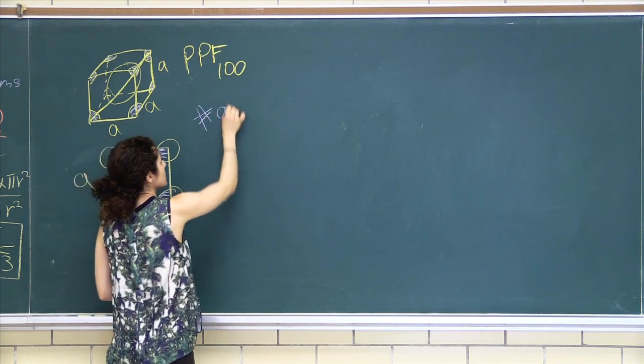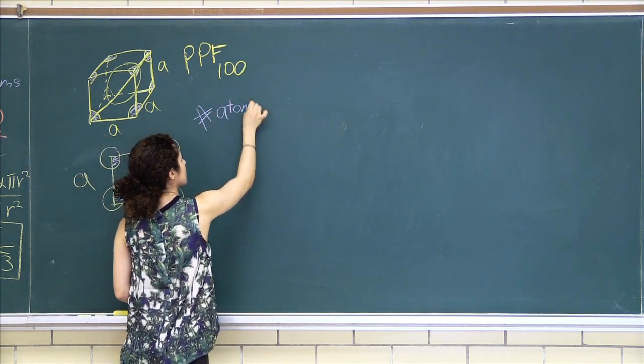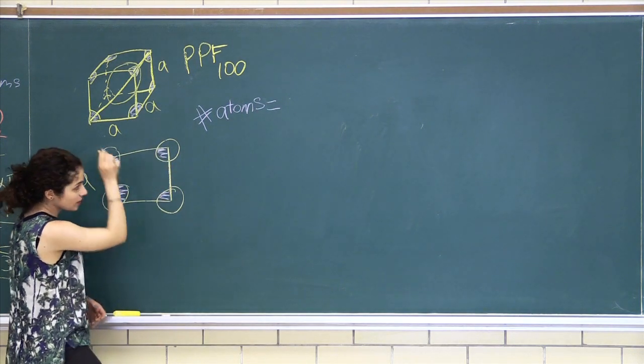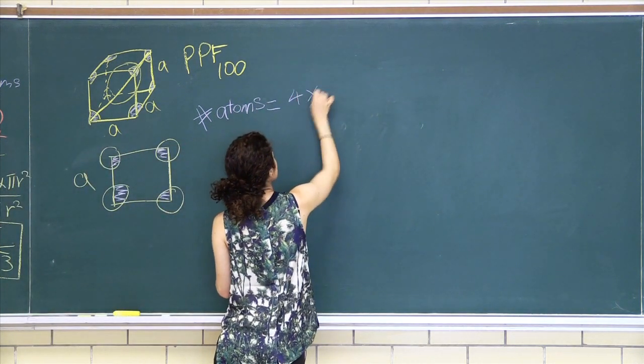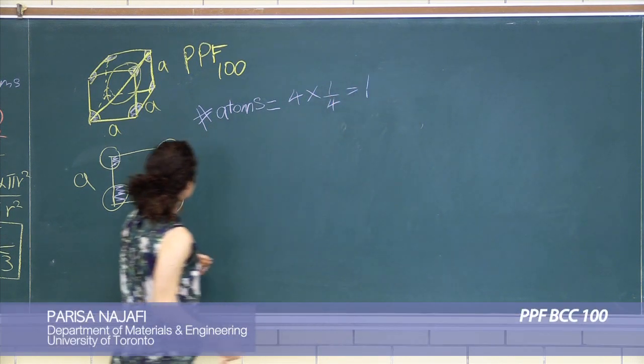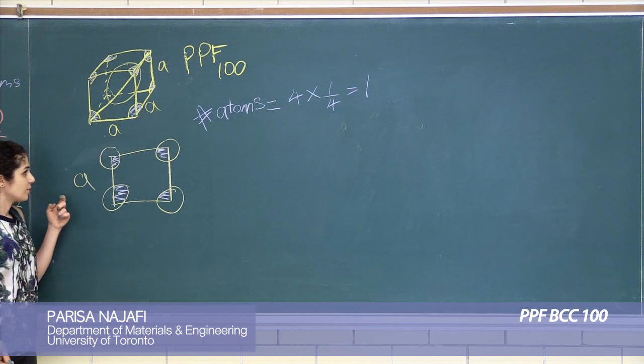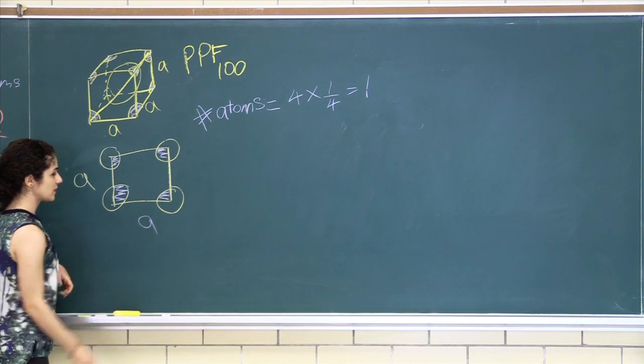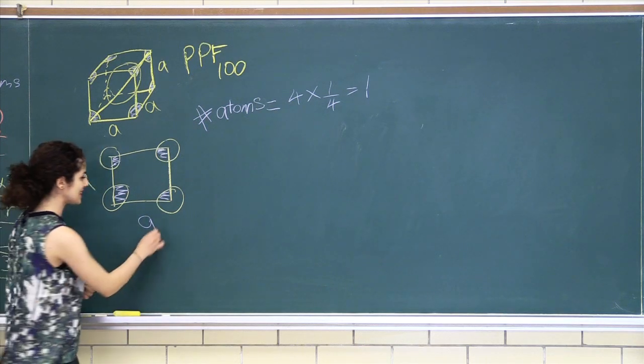We want to find the number of atoms first, and it's just one, two, three, four times a quarter, which is just one atom. And the side length—because it is a square—it's just a squared. So a for BCC...